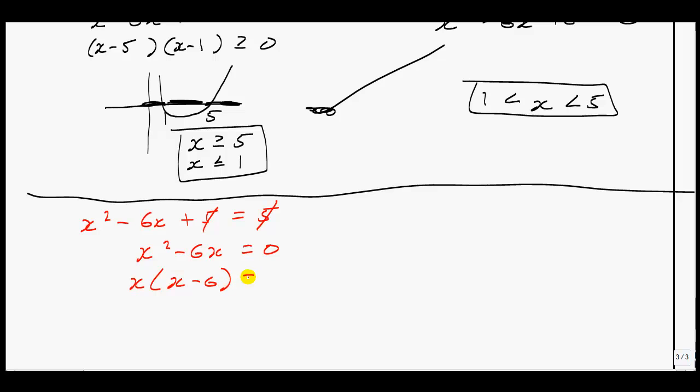Factoring out an x, you have x minus 6, like so. We end up seeing that x is equal to 0, and x is equal to 6.